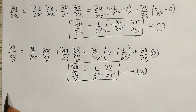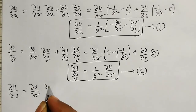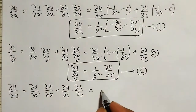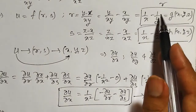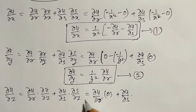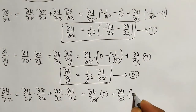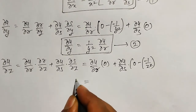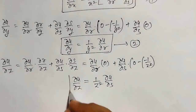One more partial derivative exists: ∂u/∂z. Using the chain rule: ∂u/∂z = (∂u/∂r)(∂r/∂z) + (∂u/∂s)(∂s/∂z). R is 1/x minus 1/y — no term of z — so ∂r/∂z = 0. S is 1/x minus 1/z, so ∂s/∂z = minus 1/z². Therefore ∂u/∂z = 1/z² times ∂u/∂s.